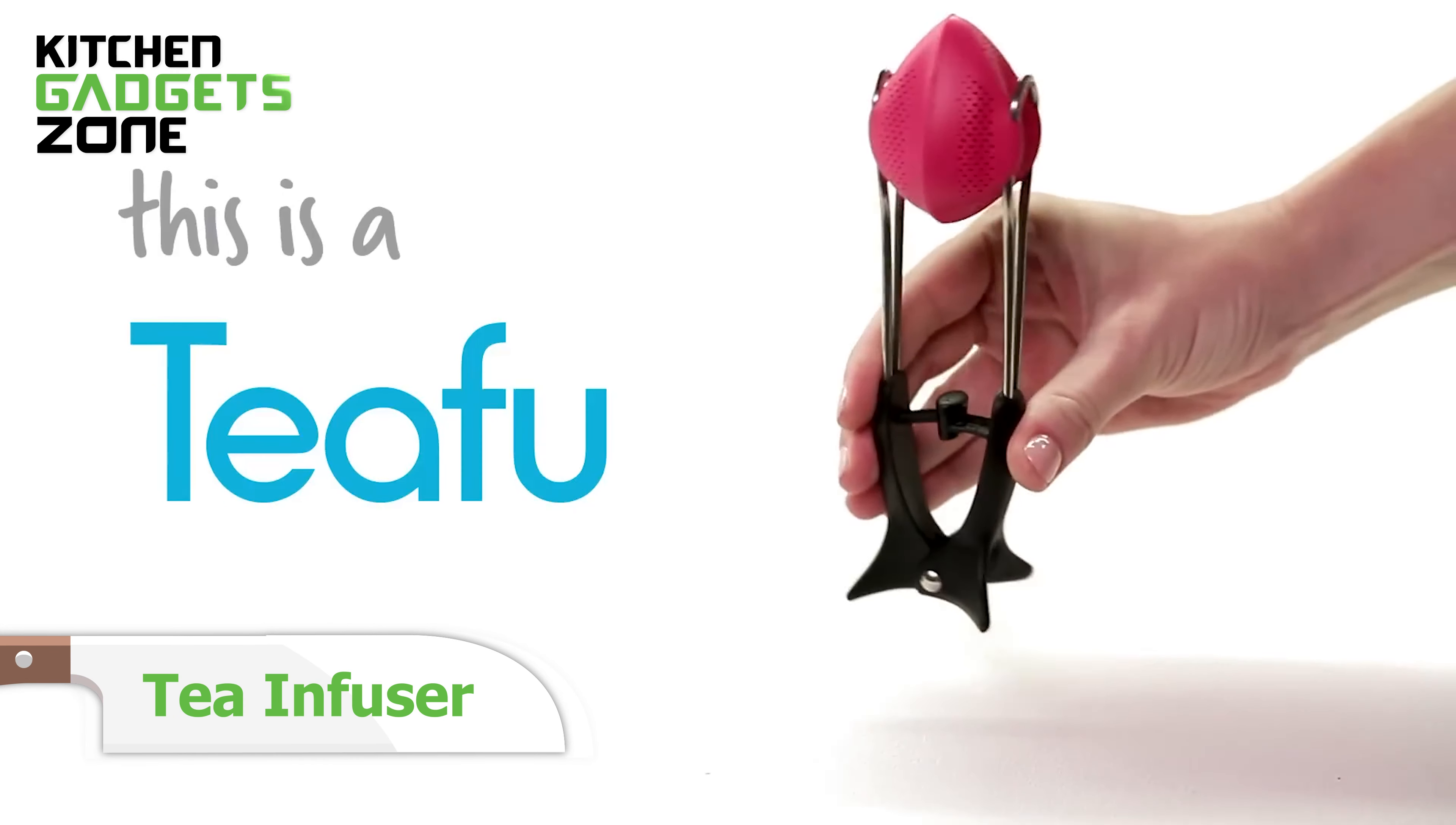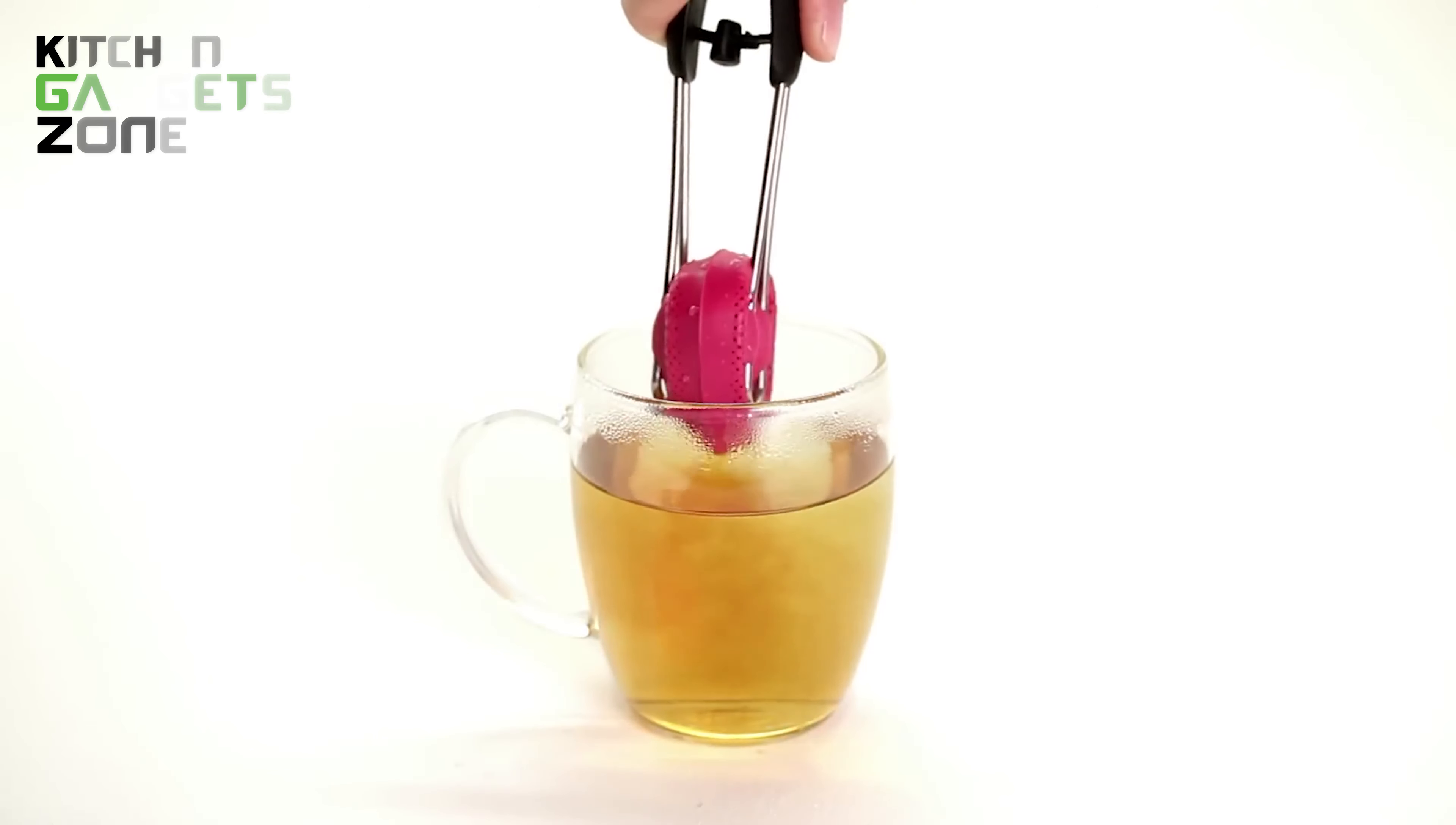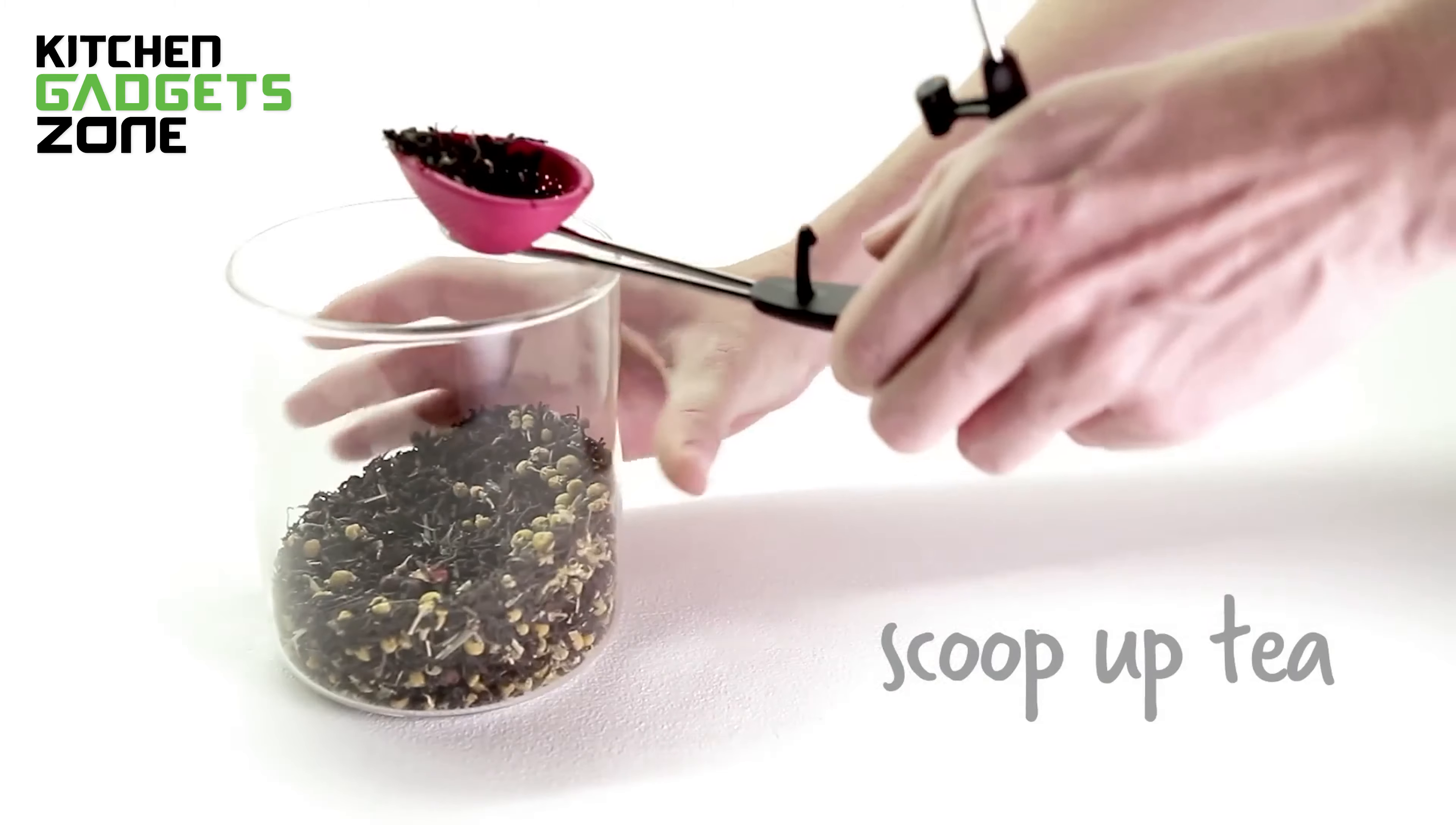Brew the perfect cup of tea every time with the Tifu Tea Infuser. This innovative gadget lets you brew your tea faster by squeezing the flexible silicone pod, forcing water to circulate through your tea leaves for maximum flavor extraction. When your tea is ready, simply squeeze out every last drop into your cup before standing Tifu up on the bench. No more messy spills or wasted tea. Tifu opens completely flat, making it easy to scoop in your favorite loose leaf tea, just like using a spoon.